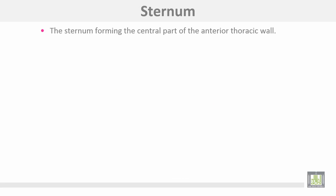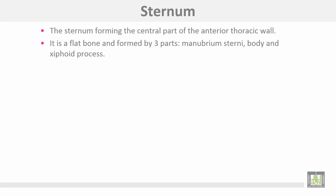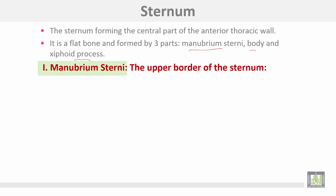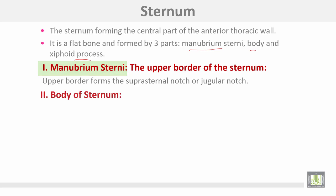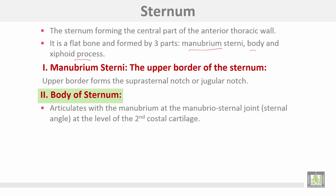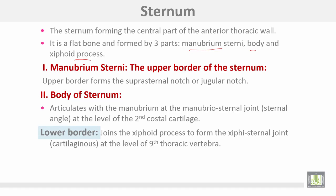The sternum forms the central part of the thoracic wall. It is a flat bone formed by three parts: the manubrium sternum, the body, and the xiphoid process. The manubrium forms the upper border of the sternum, sometimes called the suprasternal or jugular notch. The body articulates with the manubrium at the manubriosternal joint — the sternal angle — at the level of the second costal cartilage.